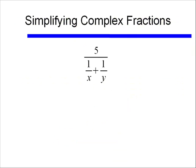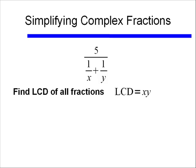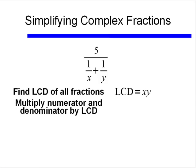If I give you something like 5 divided by 1 over x plus 1 over y, in order to simplify complex fractions, we need to find the LCD of all the fractions. In this case the LCD is simply x times y. I have a denominator of x and a denominator of y, and my LCD would be x times y. Now I need to multiply my numerator and my denominator by that LCD.